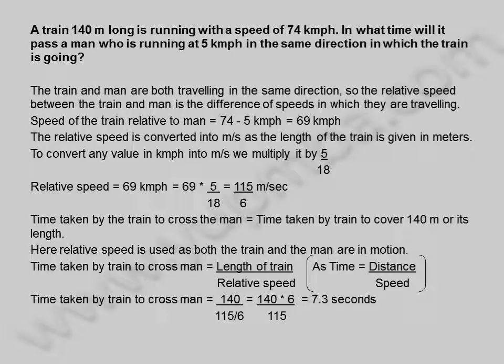Time taken by train to cross man is equal to 140 divided by 115/6, which equals 140 into 6 divided by 115, which equals 7.3 seconds. The time taken by the train to cross the man is 7.3 seconds.